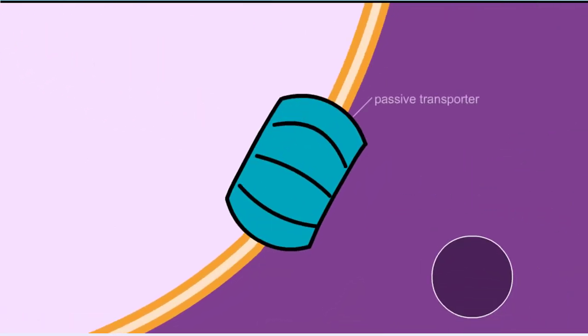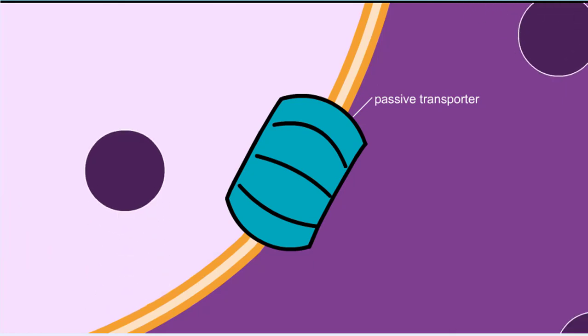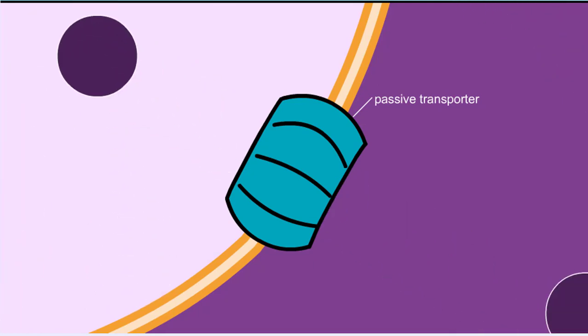Passive transport can be facilitated by transporters that provide passageways across the membrane of the right size and environment for a particular compound to cross. These types of transporters are often referred to as pores or channels.